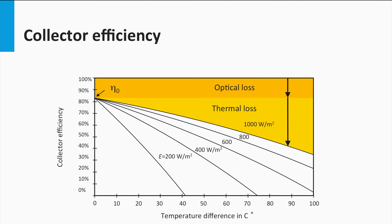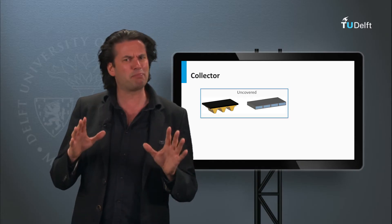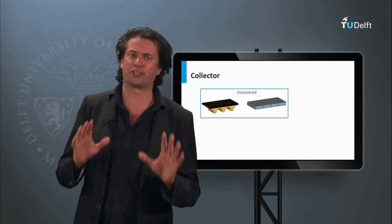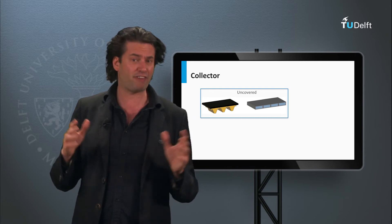To reduce losses, insulation from the surroundings is important, especially when the temperatures are high. Collectors can be classified in three categories: uncovered, covered and vacuum.